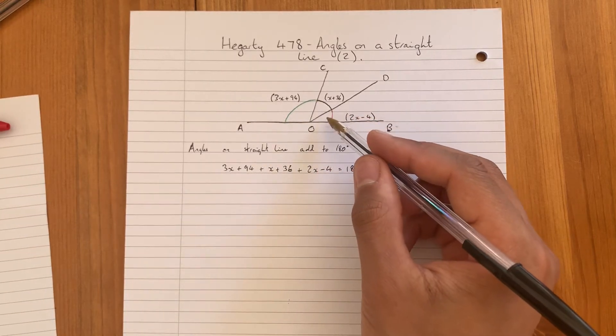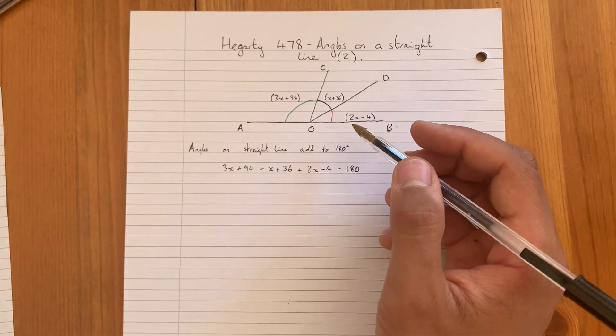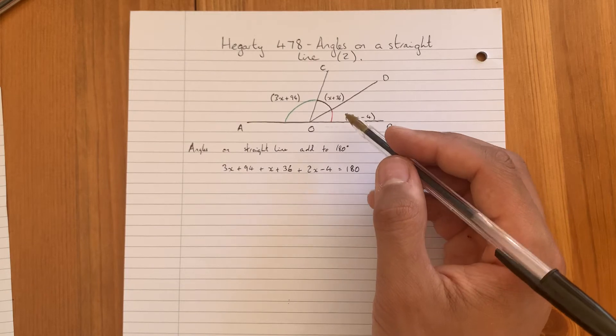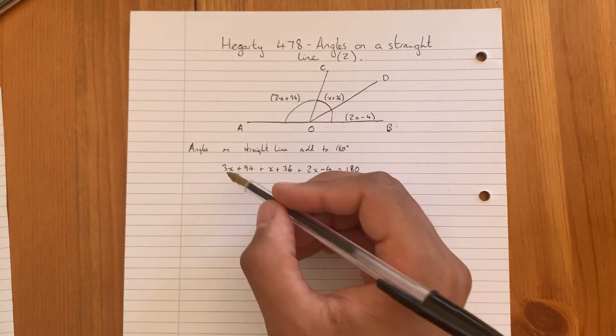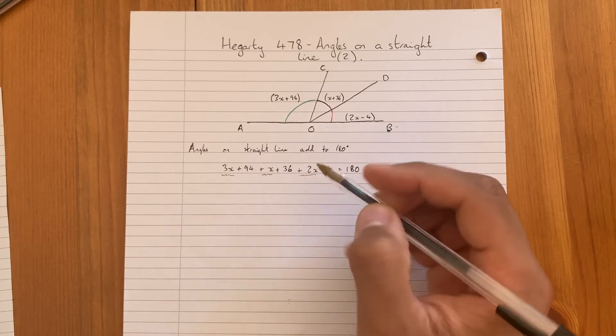So let's tidy this up. We can collect our like terms. We've got 3x plus x plus 2x, which gives us 6x. And we've got 94 plus 36